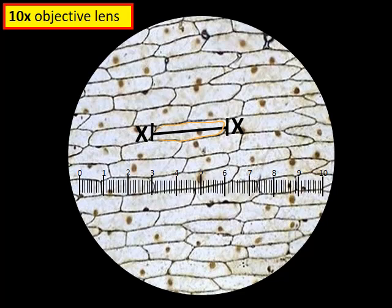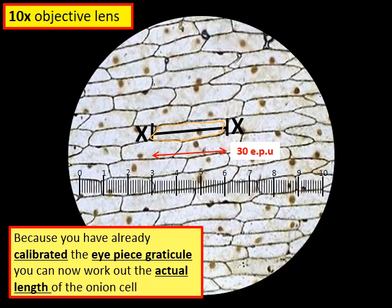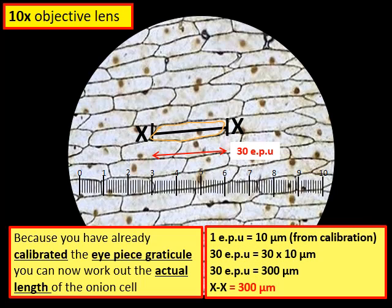We measure the width of the same onion cell under the ten times objective. We can see the cell walls on the outside and the nucleus inside, but we would need an electron microscope to see fine internal detail. The cell measures about 30 eyepiece units across. Since one eyepiece unit is now 10 micrometers, 30 × 10 = 300 micrometers — quite similar to the 325 micrometers we calculated using the four times objective lens.